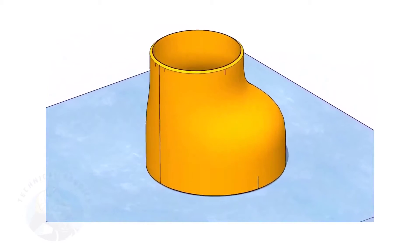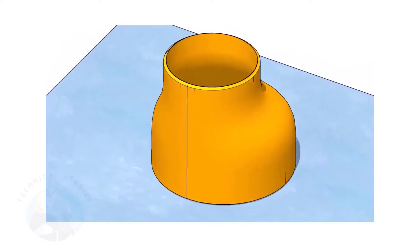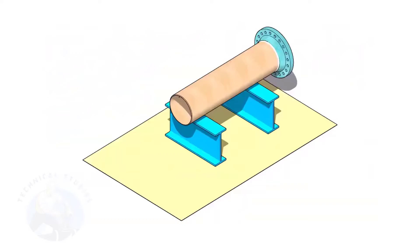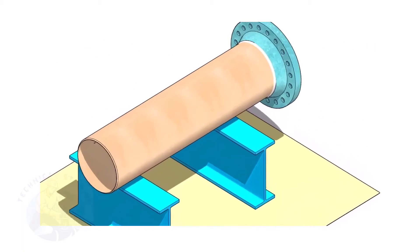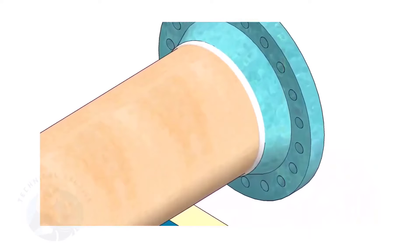Remember, the sequence of the fit up is more important. Assume that the flange is welded to the pipe. Put the spool on suitable supports.